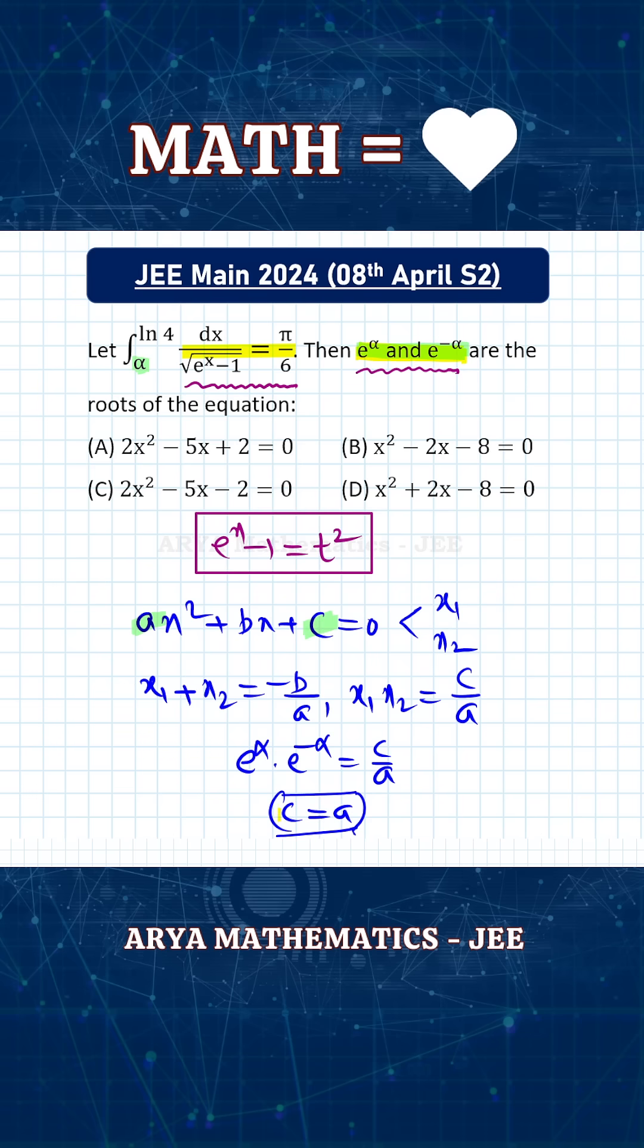This is the condition for reciprocal roots. Now here if you notice, there is only one option in which coefficient of x² and the constant term is same. You can see that in option B, C and D, these two are not equal. Only in option A, coefficient of x² and constant term is same.